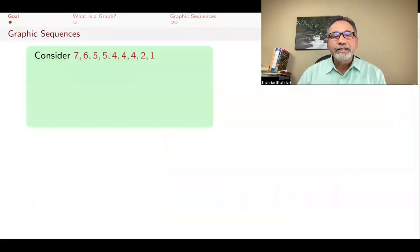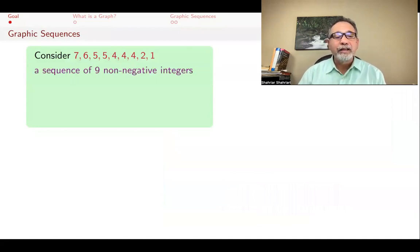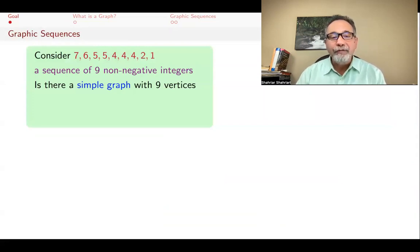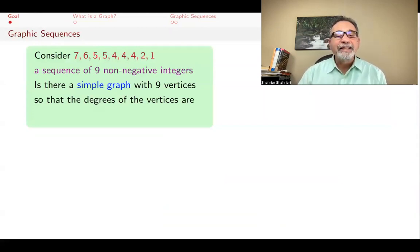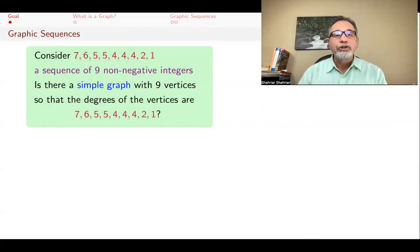Consider the following sequence of non-negative integers: 7, 6, 5, 5, 4, 4, 4, 2, 1. These are nine non-negative integers, and the question is: is there a simple graph that has nine vertices so that the degrees of the vertices are exactly this sequence? So one vertex with degree 7, one vertex with degree 6, and so on. Is that so or not? That's the question we're going to answer in this lecture.